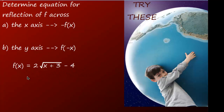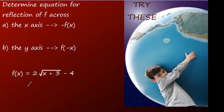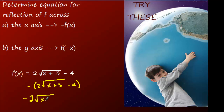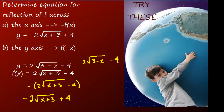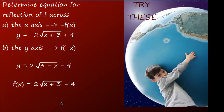One more example: f(x) = 2√(x + 3) - 4. To reflect over the x-axis, we put a negative sign in front of the entire function and distribute: that gives -2√(x + 3) + 4, since negative times -4 is positive 4. To reflect over the y-axis, we replace x with negative x, giving 2√(3 - x) - 4 — we reorder inside the square root so we don't lead with a negative.